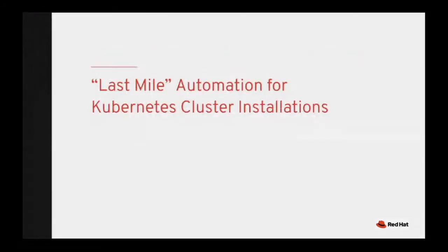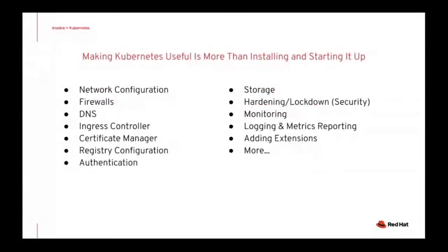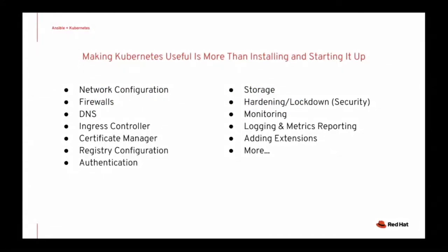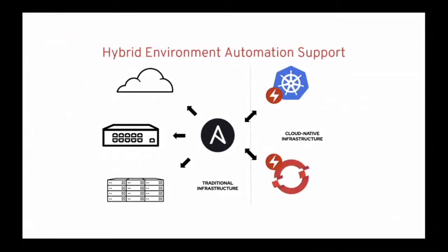The first use of Ansible in automating Kubernetes environments is what we refer to as last-mile automation for Kubernetes cluster setups. There's a lot more to making Kubernetes useful than just installing it and getting it to start up. There's additional setup and configuration of resources on the cluster and infrastructure off the cluster you'll still need to perform — things like network configuration, firewalls, DNS, setting up your registry, monitoring, logging, and other extensions. Enterprise Kubernetes offerings like Red Hat's OpenShift have installer systems that help with some of this, but they'll only get you so far.